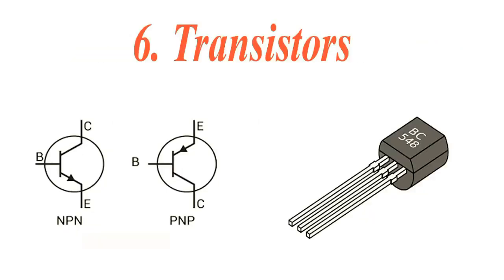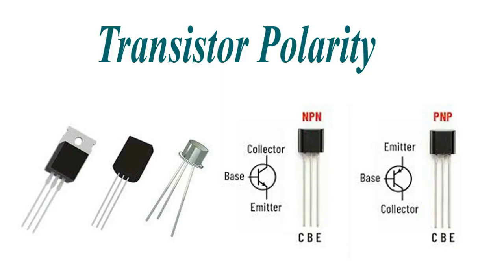Transistor. A transistor is like a tiny electronic switch or amplifier. It can control large currents using a small input signal. You can determine a transistor's polarity by reading the arrow on the emitter.